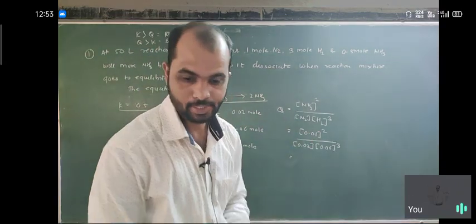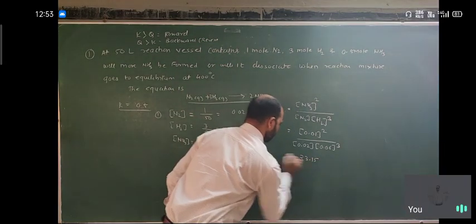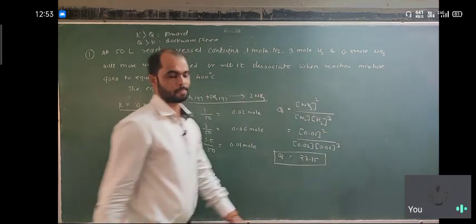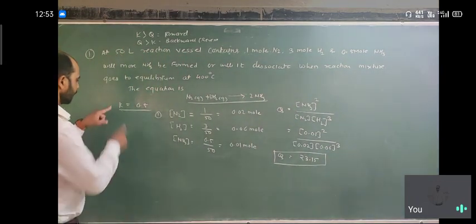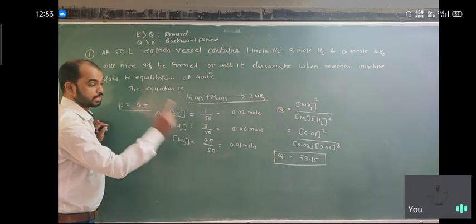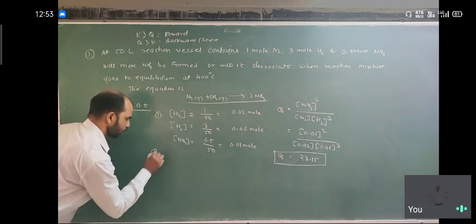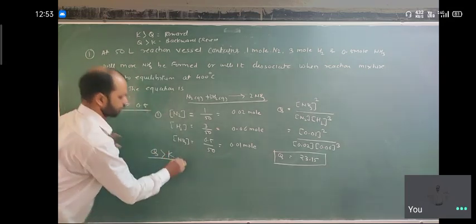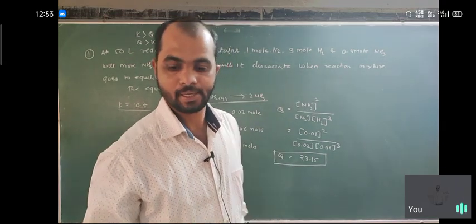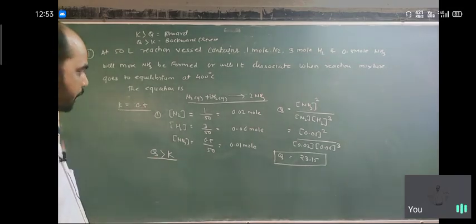So Q is equal to 23.15. If we compare here, K is equal to, given K is 0.5 and Q is 23.15. That means Q is greater than K. And if Q is greater than K, the reaction will go to the left side.